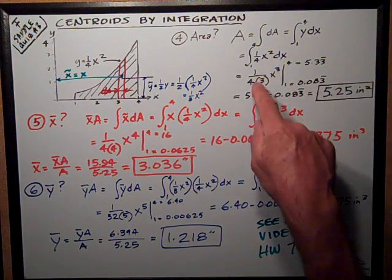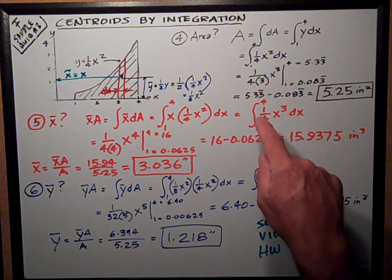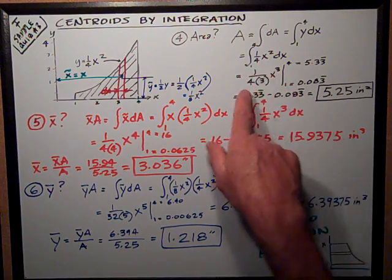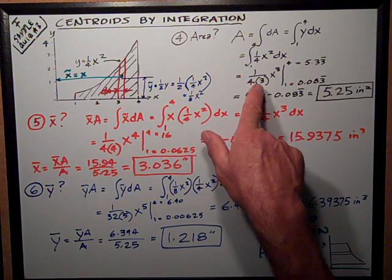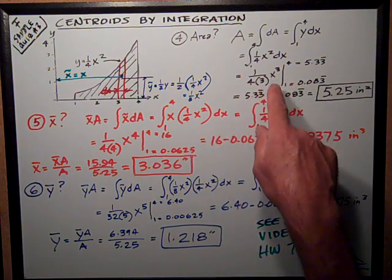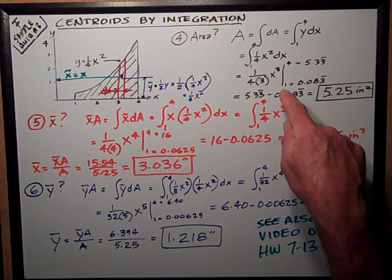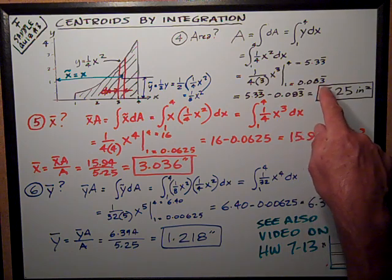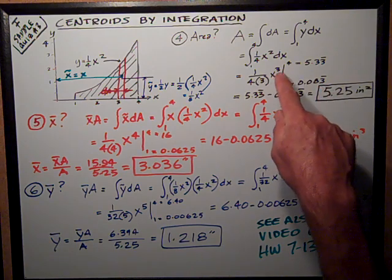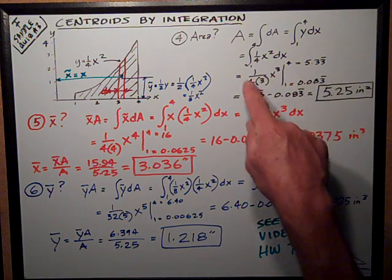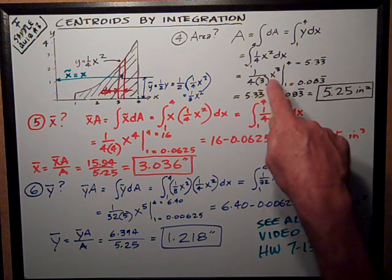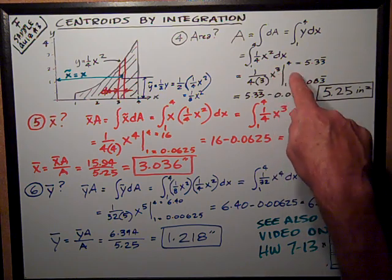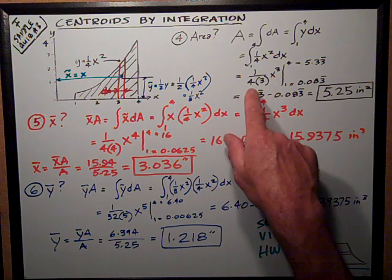We do the integral of x squared, which equals x cubed over three. Multiply that by the one-fourth, we get one over four times three x cubed. We evaluate that from at one, this value equals 0.083. At four, x value equal four, this evaluated equals four to the third power, which is 64, divided by 12, or 5.33.